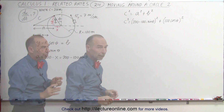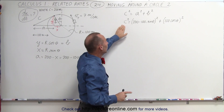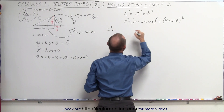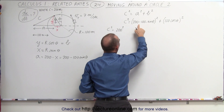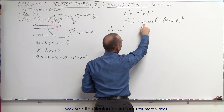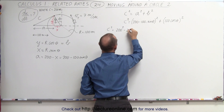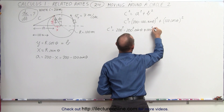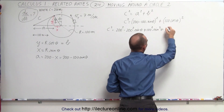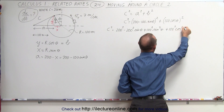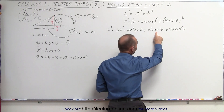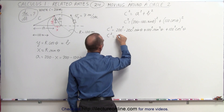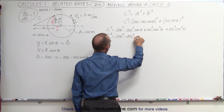We need to find dc/dt. Before taking the derivative, we multiply out the right side. Expanding: (200 − 100·sin θ)² gives 200² − 2·200·100·sin θ + 100²·sin²θ, and (100·cos θ)² gives 100²·cos²θ. Combining the last two terms using sin²θ + cos²θ = 1, factoring out 100², simplifies to: c² = 200² + 100² − 200²·sin θ.